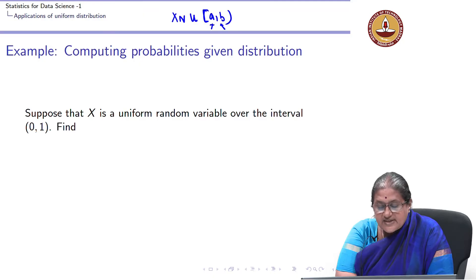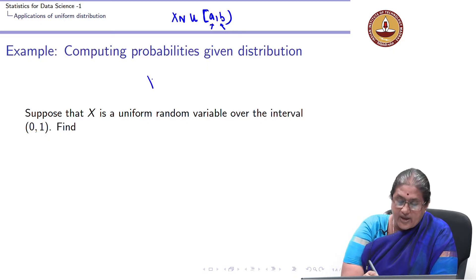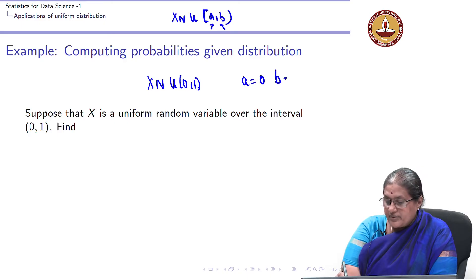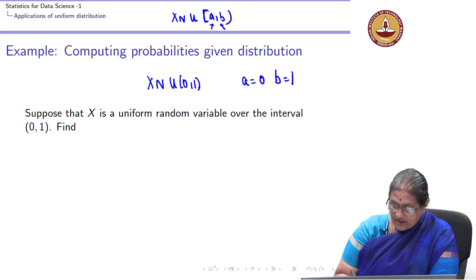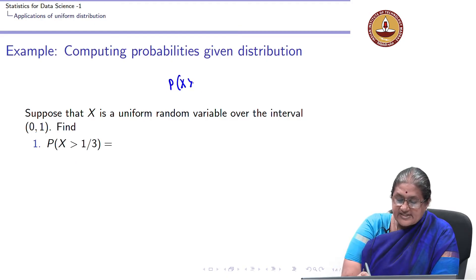Suppose X is a standard uniform random variable over the interval 0, 1. So X is uniform(0,1), my A is 0, B is 1. What is the probability X is greater than 1/3?